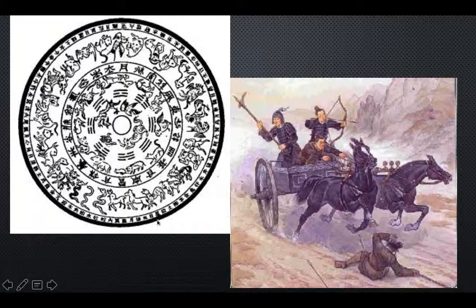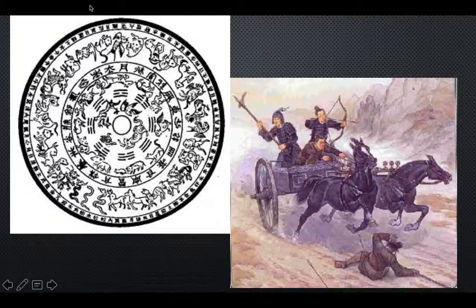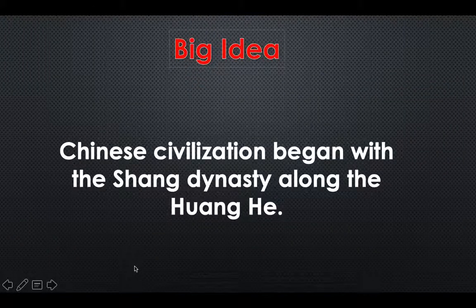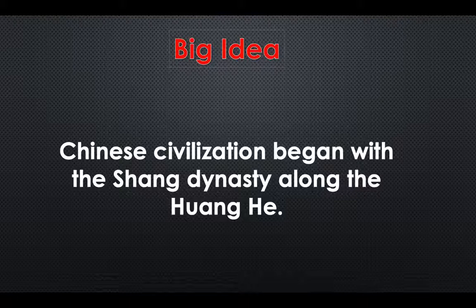The Shang also developed other advances such as chariots — you can see a chariot here — powerful bows, and bronze armor. They definitely developed bronze body armor during this time, as well as an advanced calendar system, shown in this picture of an early Shang calendar. The big idea to take from this is that Chinese civilization began with the Shang dynasty along the Huanghe, or the Yellow River. Thanks.